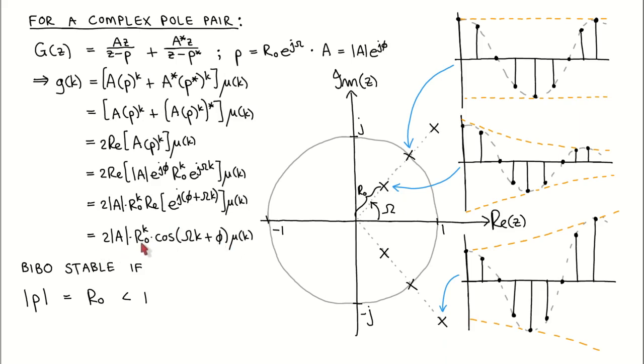Its magnitude changes according to R0 to the power k, where R0 is the distance of the pole from the origin of the z-plane. Its frequency is given by omega, which is the angle of the pole in the z-plane.